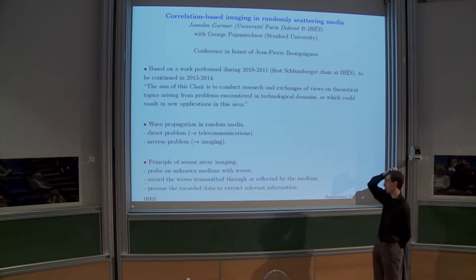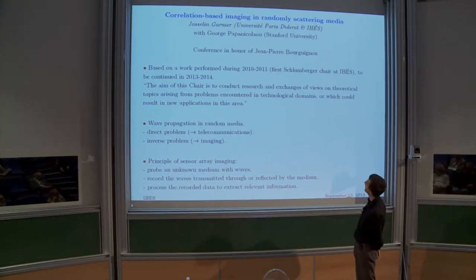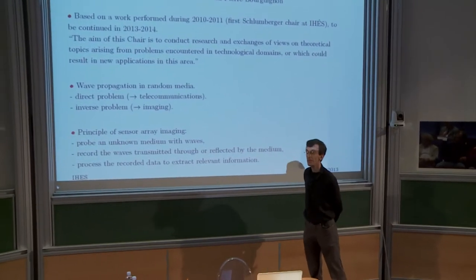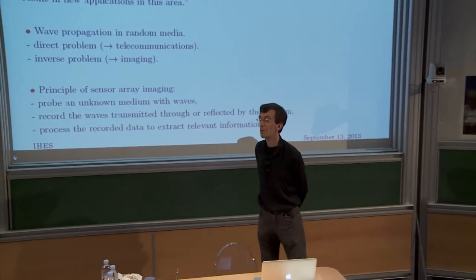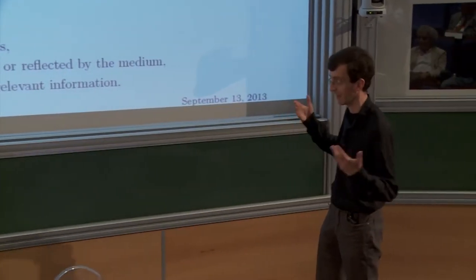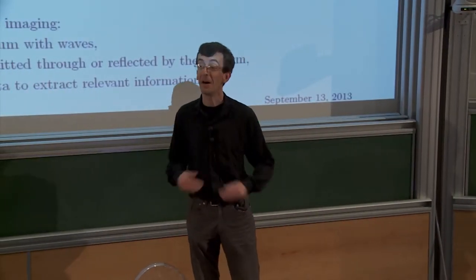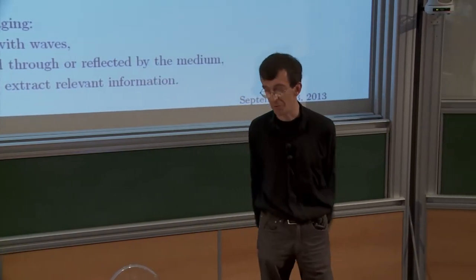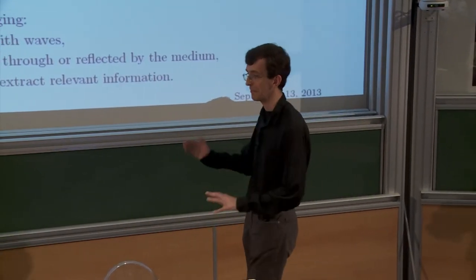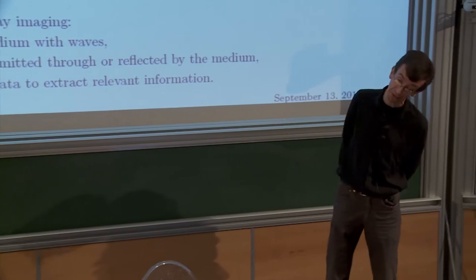From the applications point of view, there are two main types: the direct problem and the inverse problem. For the direct problem, I've worked a lot in wireless communications and communications through optical fibers. The defects of optical fibers are problematic — you may use nonlinear effects to compensate for random effects. But today I will speak about imaging, that is the inverse problem.